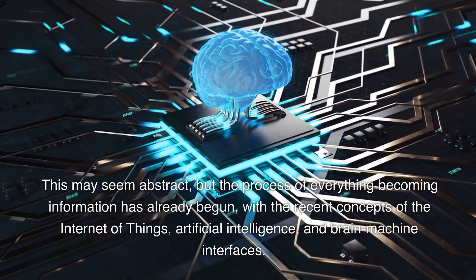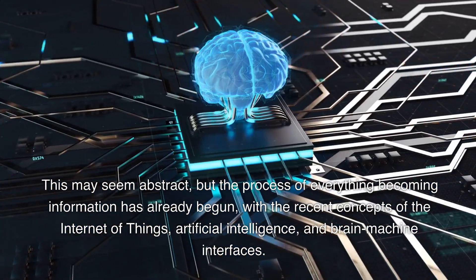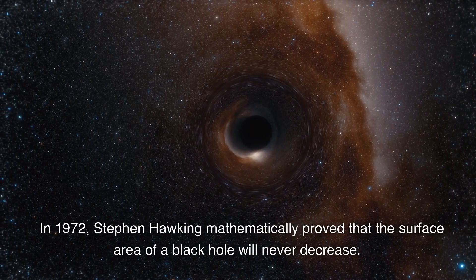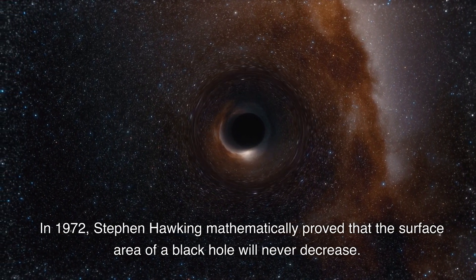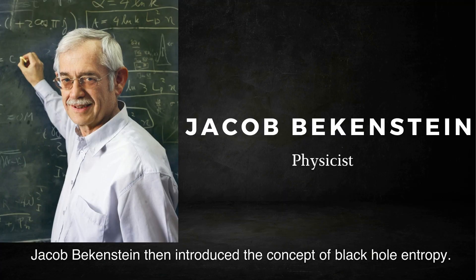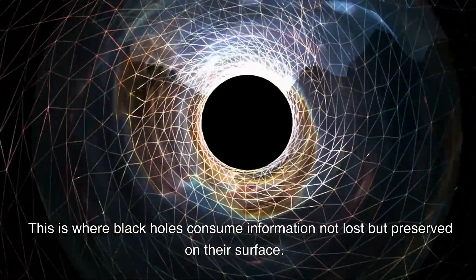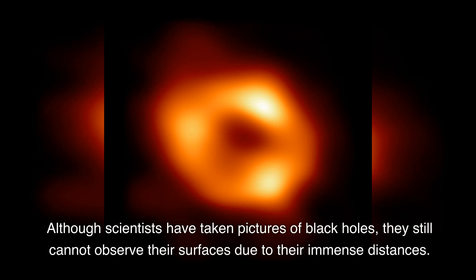In 1972, Steven Hawking mathematically proved that the surface area of a black hole will never decrease. Jacob Bekenstein then introduced the concept of black hole entropy. This is where black holes consume information—not lost but preserved on their surface. Although scientists have taken pictures of black holes, they still cannot observe their surfaces due to their immense distances.